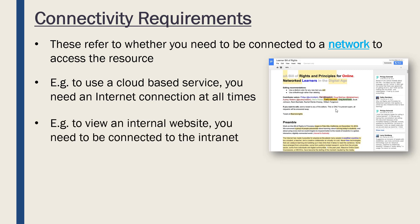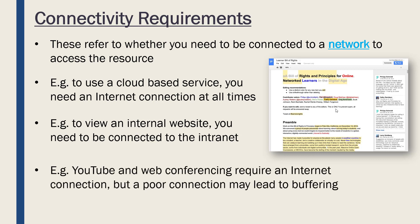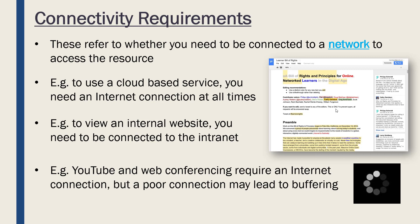A second example: if we're wanting to use an internal website to communicate information, we need to make sure that people are all connected to your intranet — your internal network. You can't go home and expect to view your internal website because it's only available at your workplace. You can still be connected and it can still be an issue — YouTube and web conferencing platforms require an internet connection because they're online, but they can still be difficult to use if you have a poor connection. If your internet is slow or drops in and out, this may lead to issues like buffering, where it's waiting to load video or a conference call but can't because your internet is too slow. So you can still be connected but may need a fast enough network to use it properly.